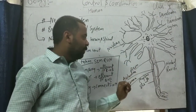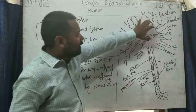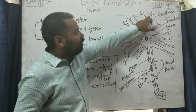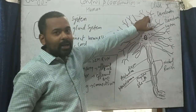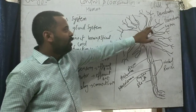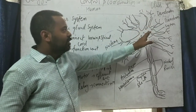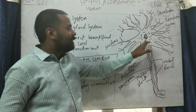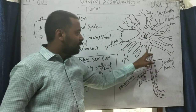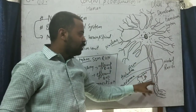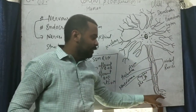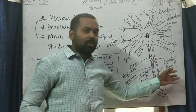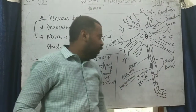The myelin sheath is the outer covering, the axolemma is the innermost layer, and the neurolemma is present after the axolemma. Impulses start from the dendrites, are sent to the dendron, the dendron sends them to the cytone, the cytone sends them to the axon, and the axon sends these impulses to the spinal cord.